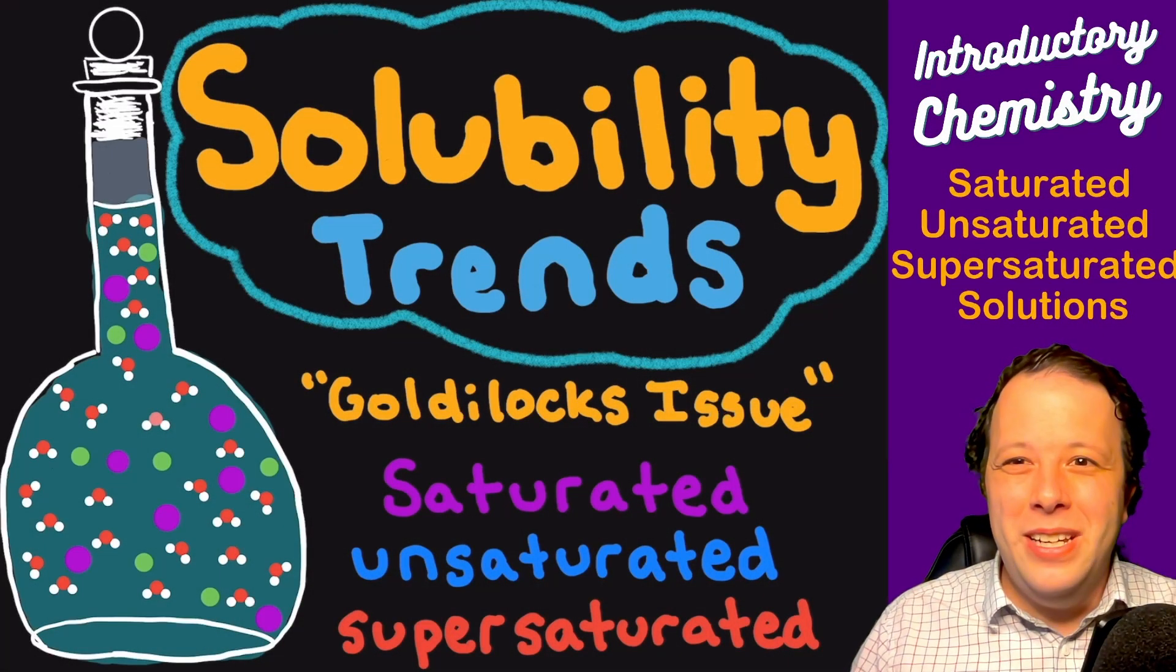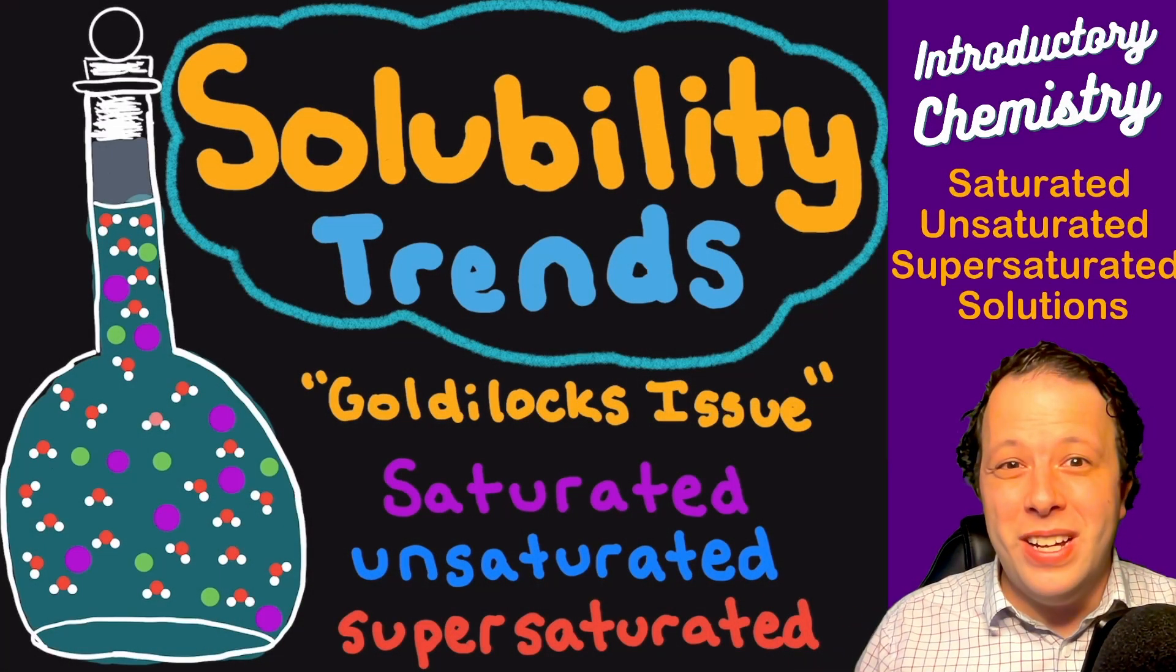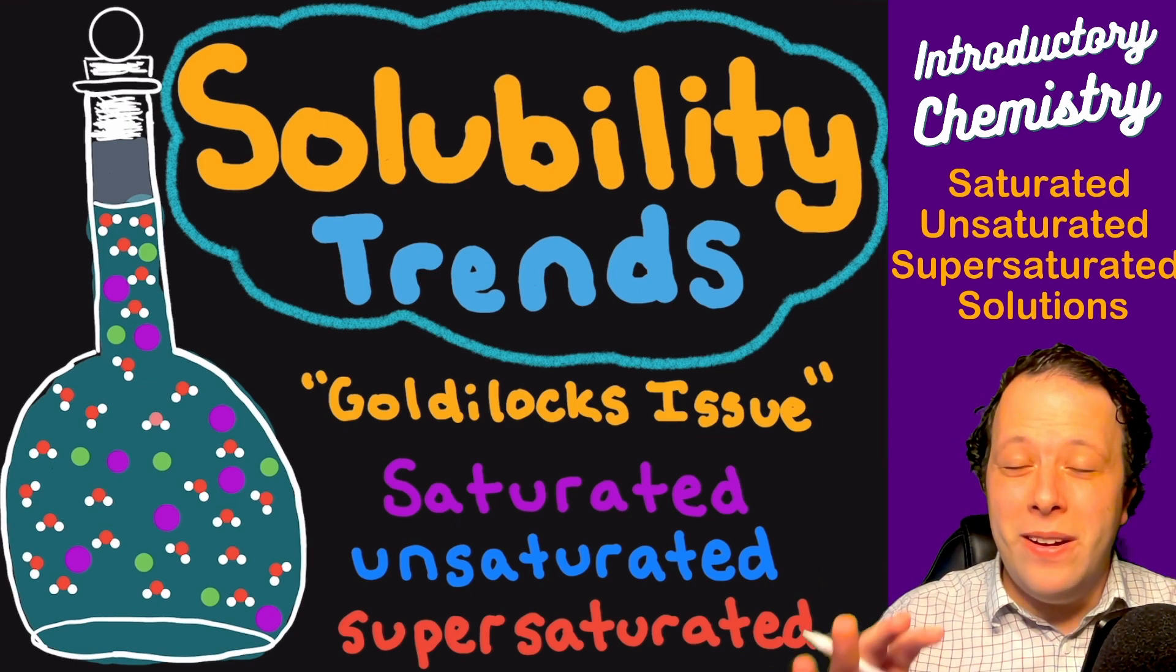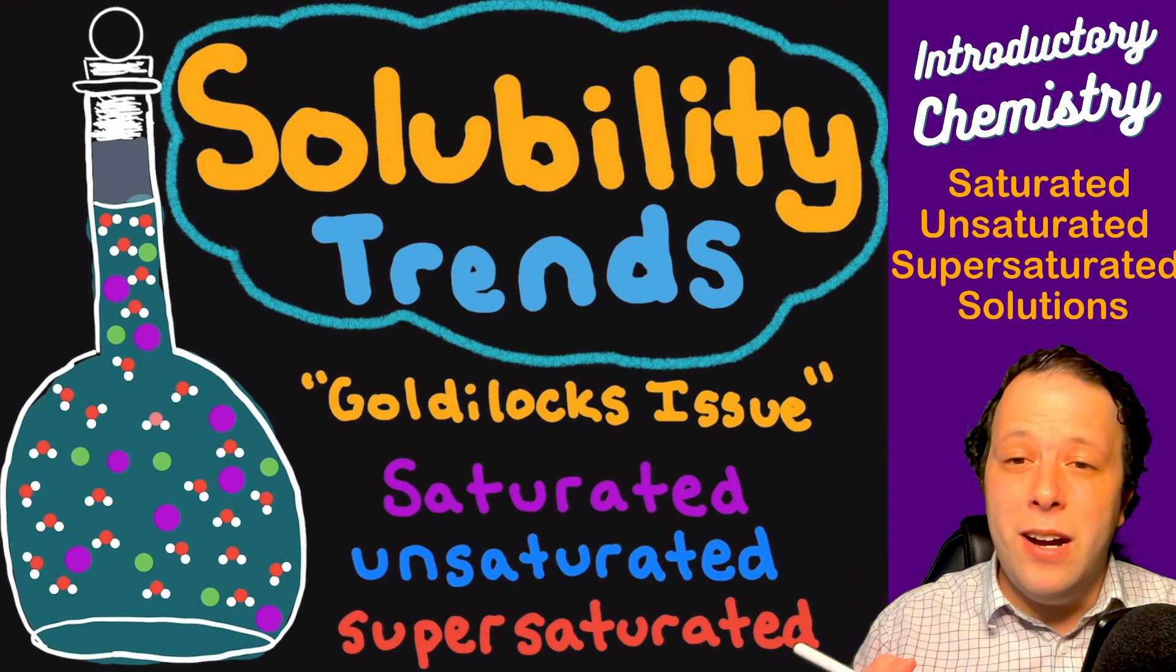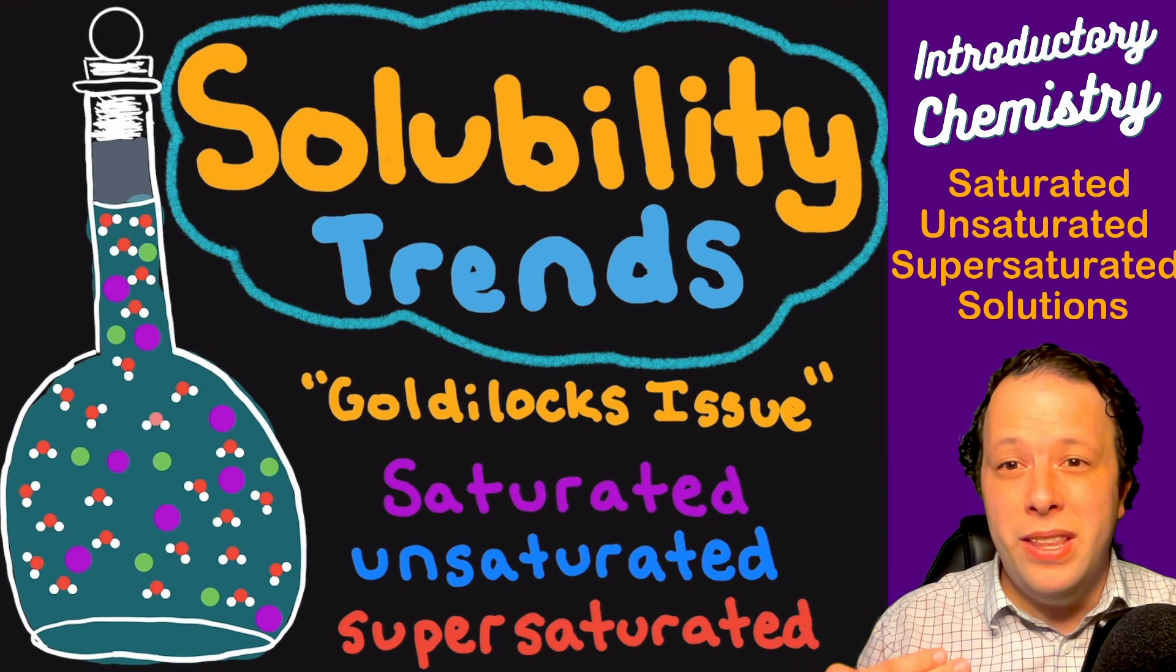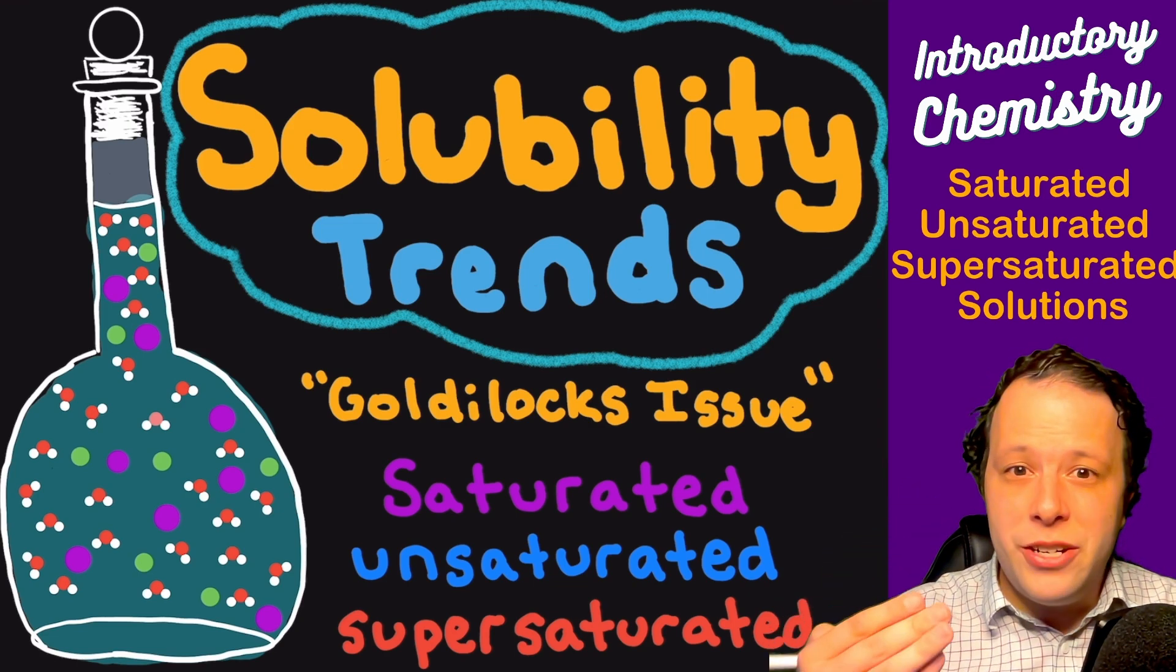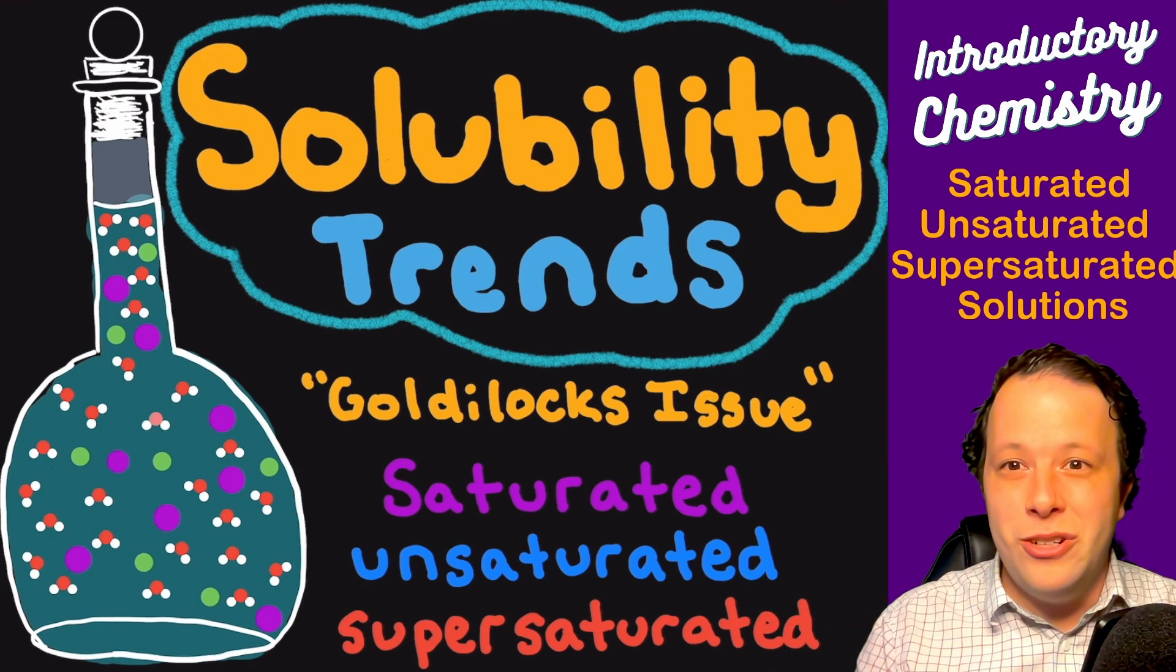Hello and welcome back to another video with It's Dr. Dan. Today we're going to be learning about solubility trends. When it comes to solubility trends, this is all about how you can label solutions based on how concentrated they are, meaning how much of a solute exists within the solution. Because of that, you can label them as saturated, unsaturated, or supersaturated solutions.